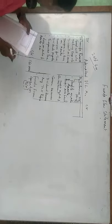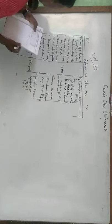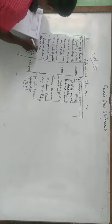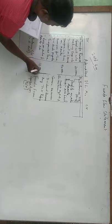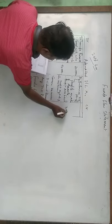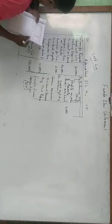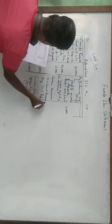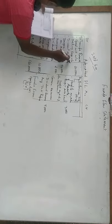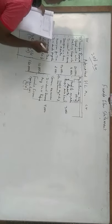Depreciation is given as 90,000 rupees. Goodwill written off is 20,000 rupees. Loss on sale of machinery is 10,000. Profit on sale of machinery is 3,000. Tax provision is 2,000. Dividend received is 7,000. Preliminary expenses written off is 4,000. Transfer to general reserve is 30,000.